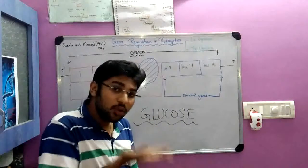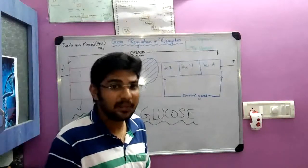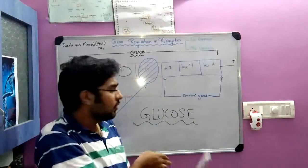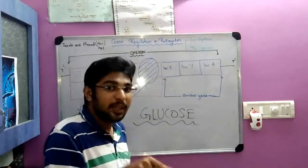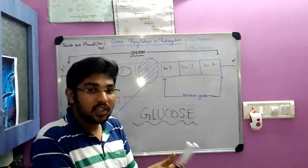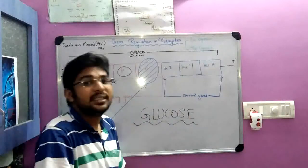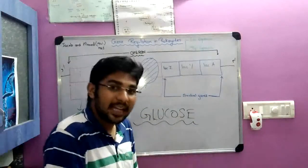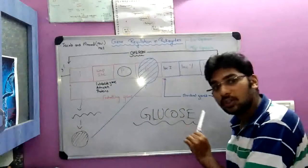When glucose is present, why should E. coli take lactose? Why should it break down lactose — wasting time and energy? To conserve that energy, this negative regulation takes place. When glucose is high, there is no cAMP production, no complex formation, no binding to the CAP site, and hence it does not stabilize RNA polymerase and does not initiate the lac operon. The lac operon is switched off; there is no enzyme synthesis, no transcription.